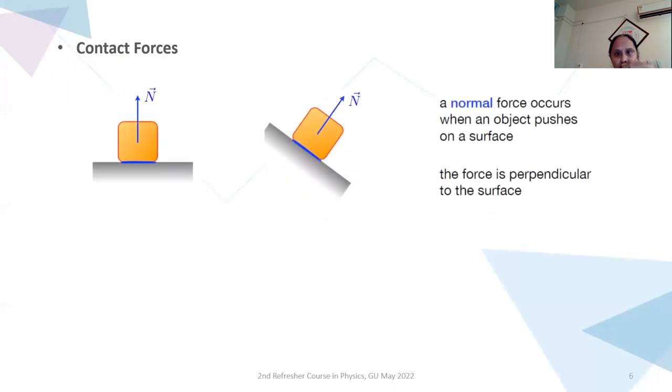We have contact forces. In these two figures one is horizontal to x-axis and second one is slightly inclined. But in both the figures you can see vector n which is a normal force occurs when an object pushes on a surface. And the word normal itself suggests that the force is perpendicular to the surface. Here you have a normal, you have a horizontal surface, a body is moving on it and normal force is there.